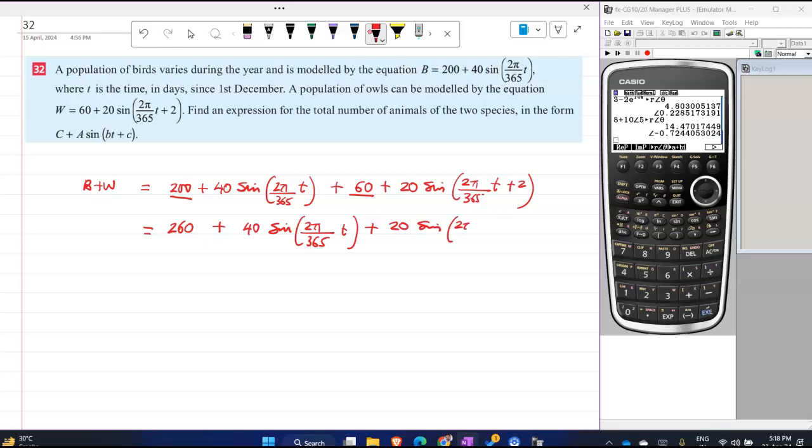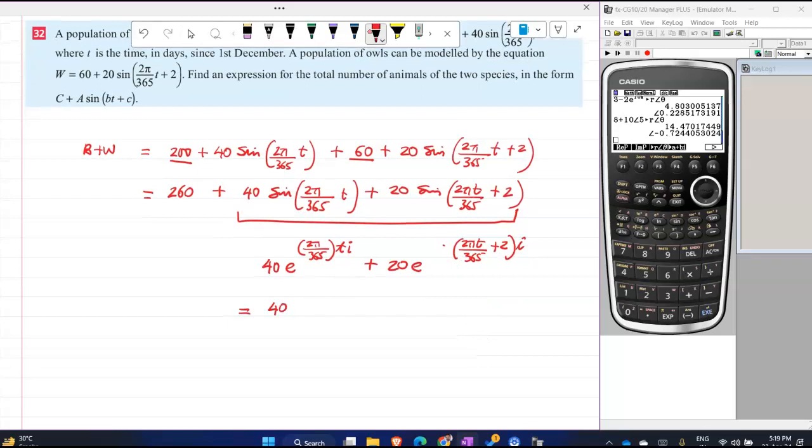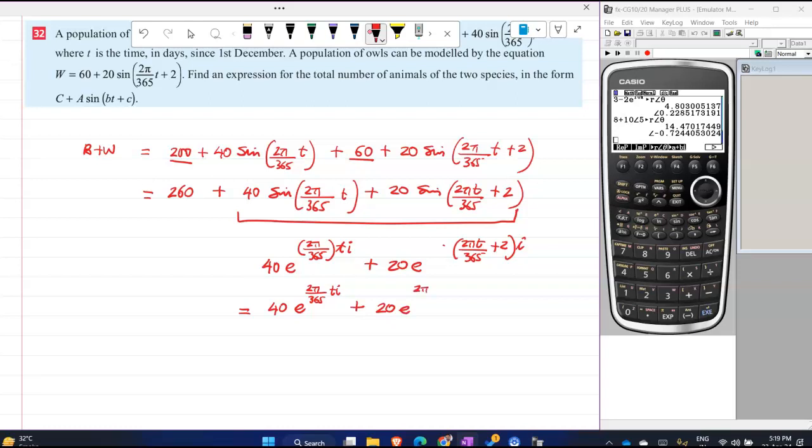Now what you do is you apply the same procedure. See, basically this is to combine the same functions. You don't have to worry about this. So now you are combining this. This you will write as 40 e^(2πi/365 T) plus 20 e^(2πi/365 T + 2i).